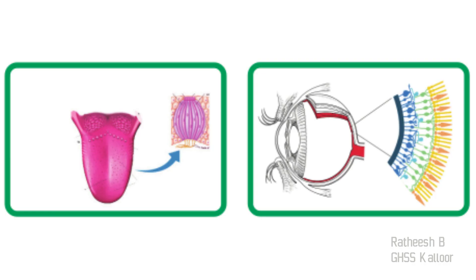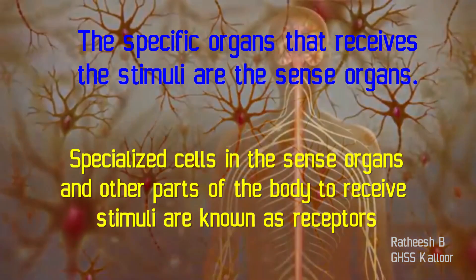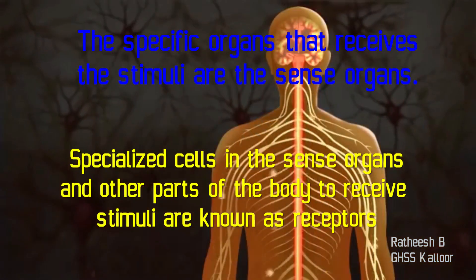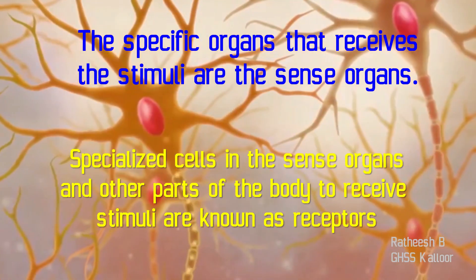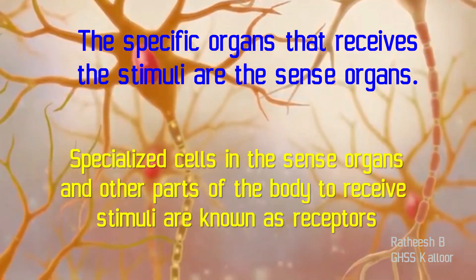These stimuli are received by certain specific organs in our body. For example, light is received by the eye, and the sense of taste is experienced with the help of the tongue. These organs are called sense organs. You can see two sense organs — tongue and eye. The specific organs that receive the stimuli are called the sense organs. There are specialized cells in the sense organs and other parts of the body to receive stimuli, and these cells are known as receptors.